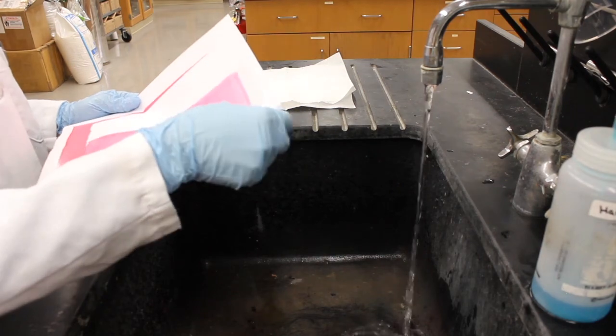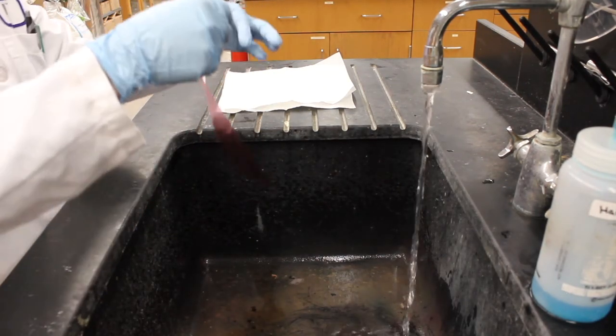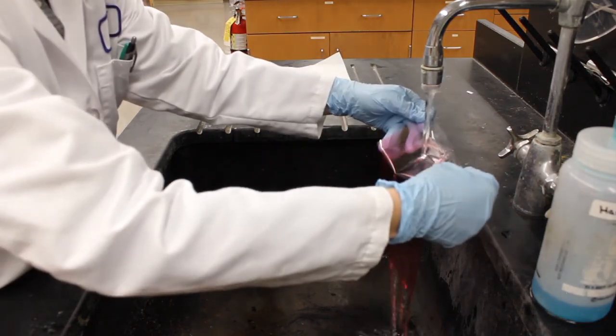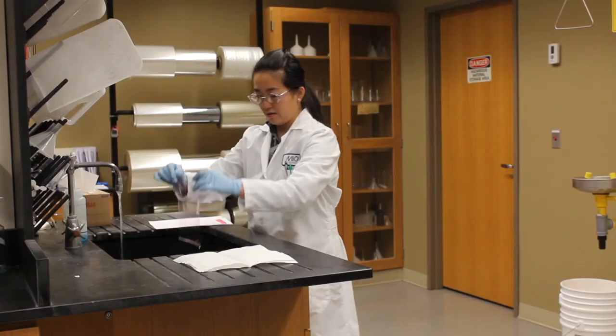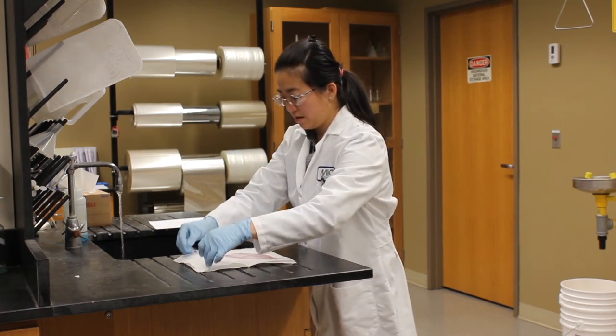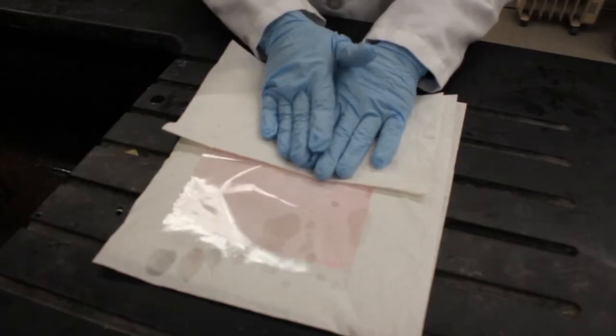Rinse the sample with tap water until the water runs clear. You can discard the paper at this time. Once the water runs clear, shake excess water off of the sample, then blot with a paper towel.